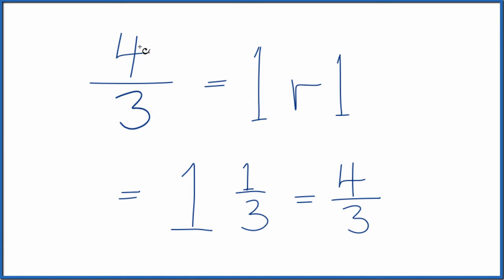So to recap, we divided four by three. We got one with a remainder of one. So here's our whole number. Our remainder is the numerator, and then that original denominator, that's our denominator here.